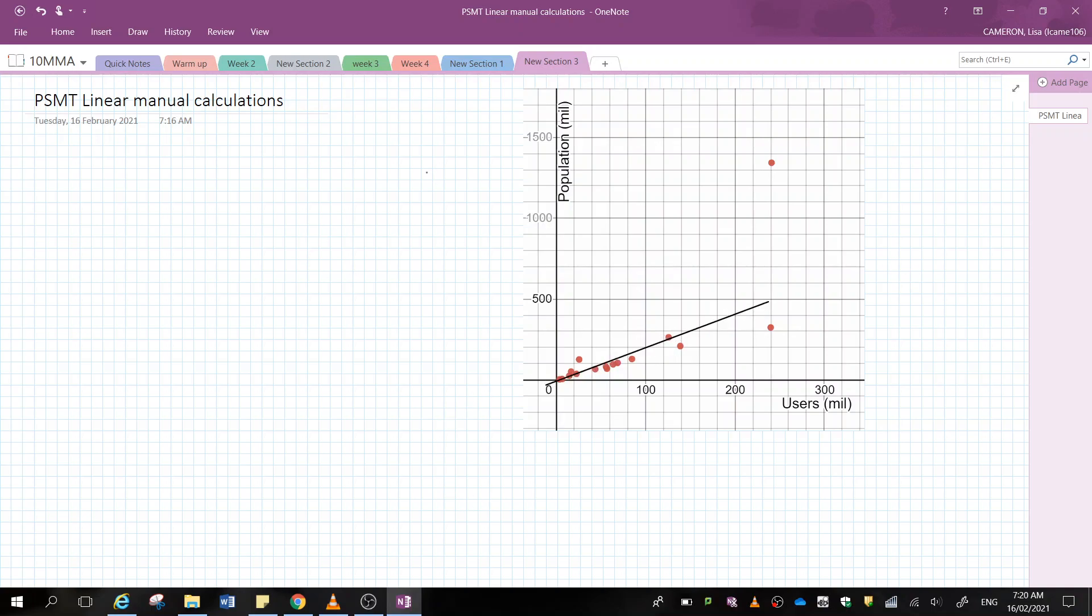Now, the next thing that I need to do is calculate two coordinates off my line of best fit so that we can determine what the gradient is. My c value for this should be zero because when Facebook's first invented, it doesn't have any users, or at most it has one user, which should be Tom from Mark Zuckerberg.